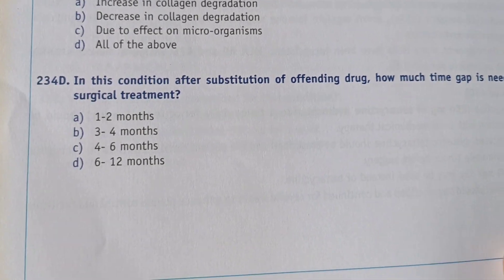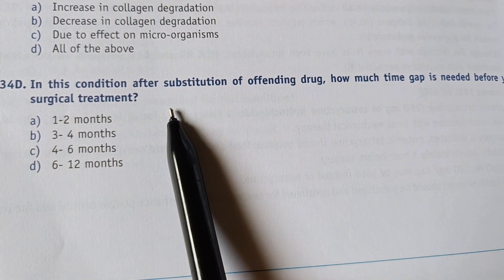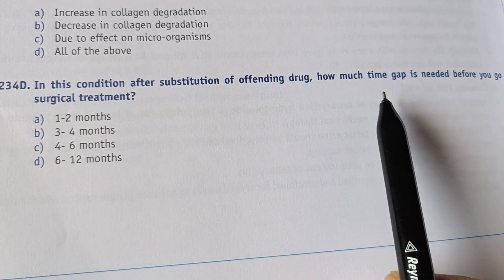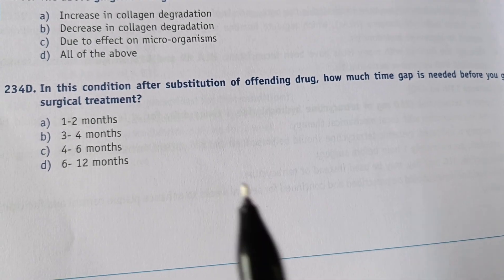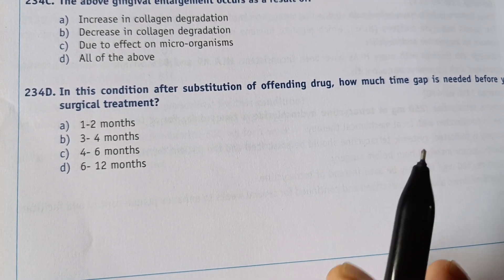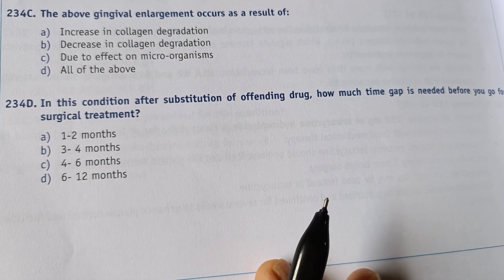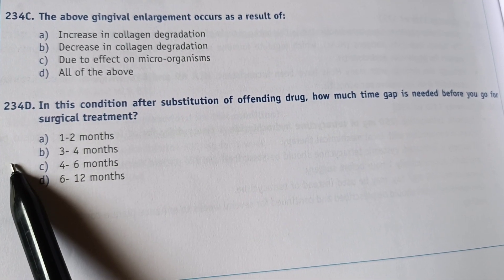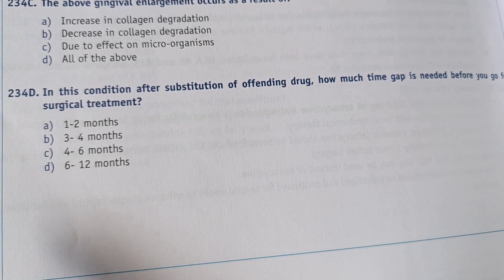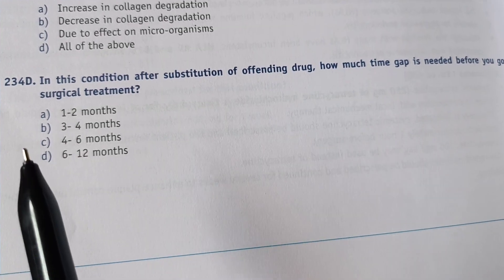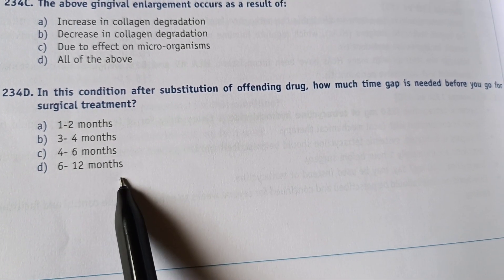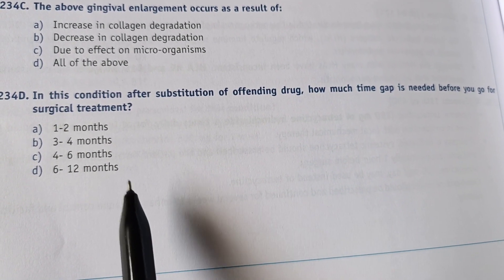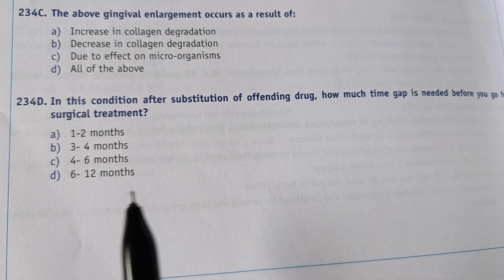Next question: in this condition, after substitution of the offending drug, how much time gap is needed before going for surgical treatment? Options are: A) 1–2 months, B) 3–4 months, C) 4–6 months, D) 6–12 months. The right answer is option D — 6–12 months is needed before proceeding with surgical treatment.